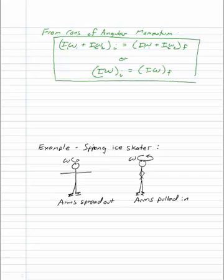In other words, if I had a single object before and I tried to say that Mv for that object initially is equal to Mv for that object finally.